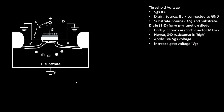What we will do now is increase the gate voltage. By inspection, when you increase the gate voltage it will repel more and more holes from the P-type substrate — or more precisely, from the channel area.